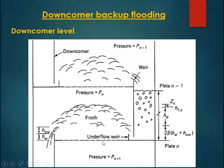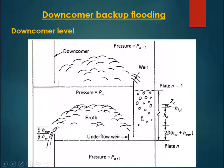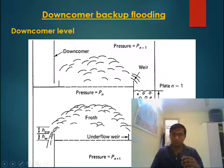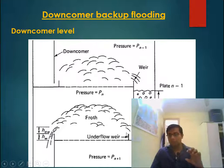Similarly, if the liquid level on the tray where downcomer liquid has to flow goes high, then the downcomer level also goes high. Additionally, when any fluid exits from a pipe — in this case the downcomer — there is an exit loss. We studied entry and exit losses in fluid mechanics. The exit loss is proportional to the square of velocity, so when downcomer liquid exit velocity is high, exit loss is high and must be compensated by the downcomer liquid level.